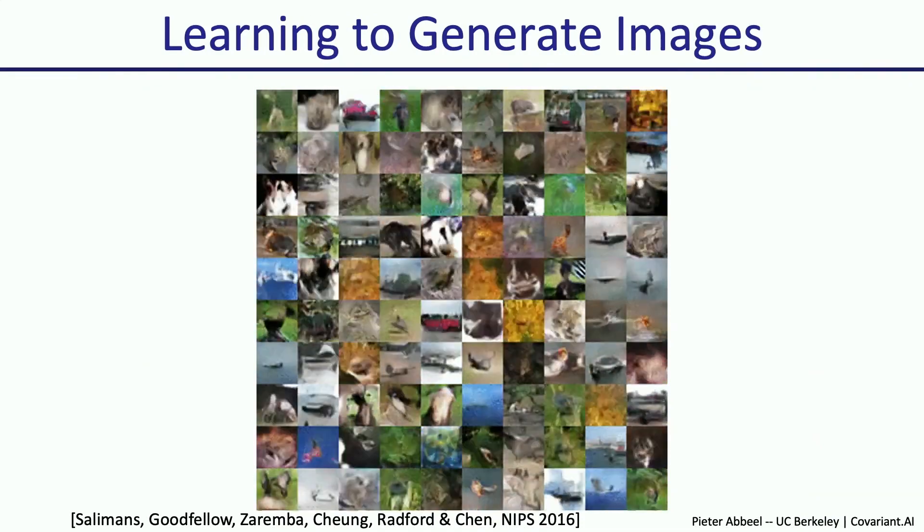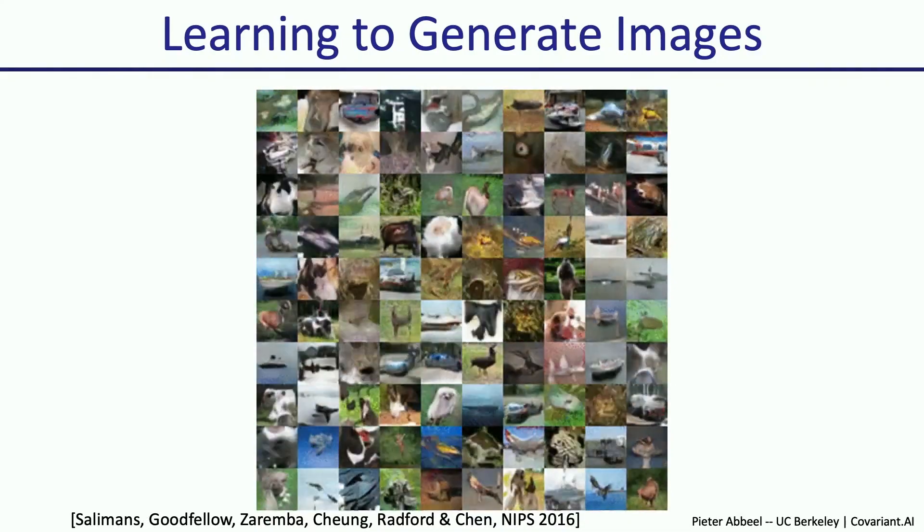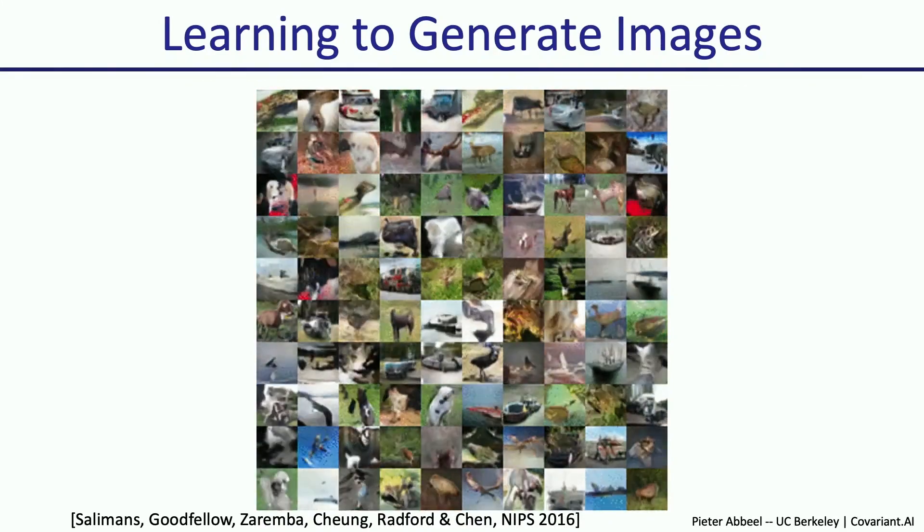What we see here is this learning to generate images in action. Unfortunately we have to stop here as we're running out of time. There are two questions. Do you have any ideas for data augmentation not related to images?